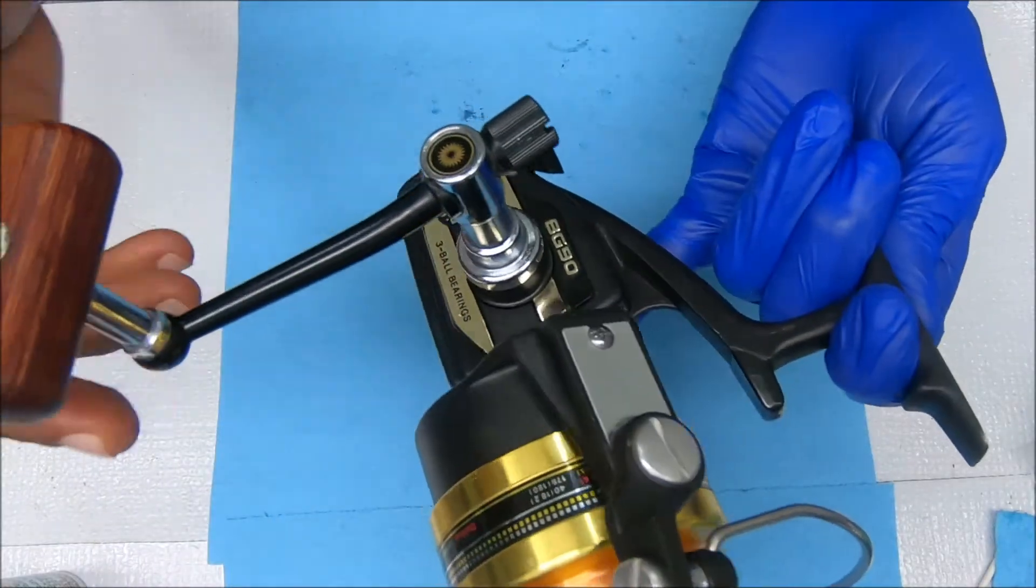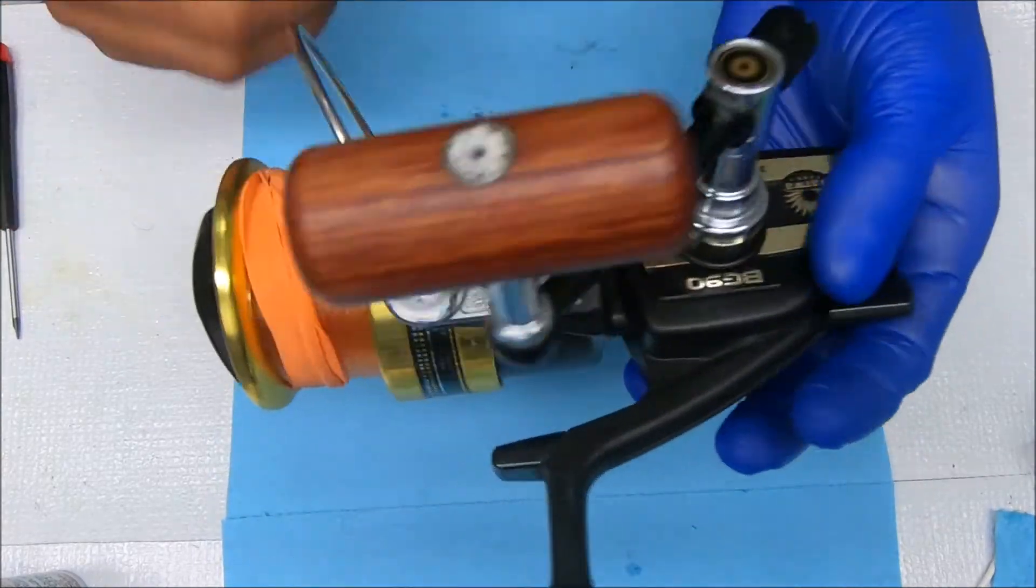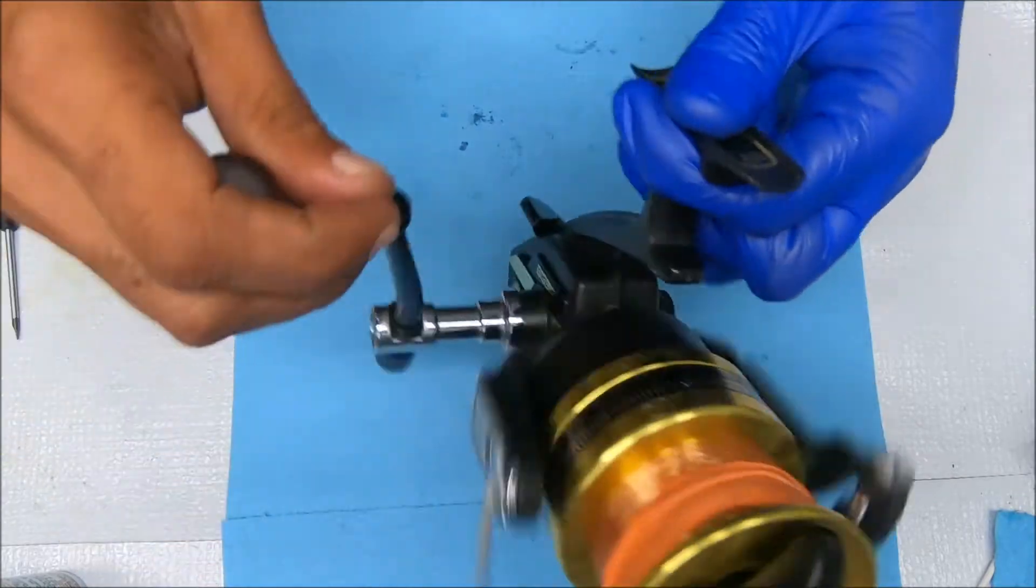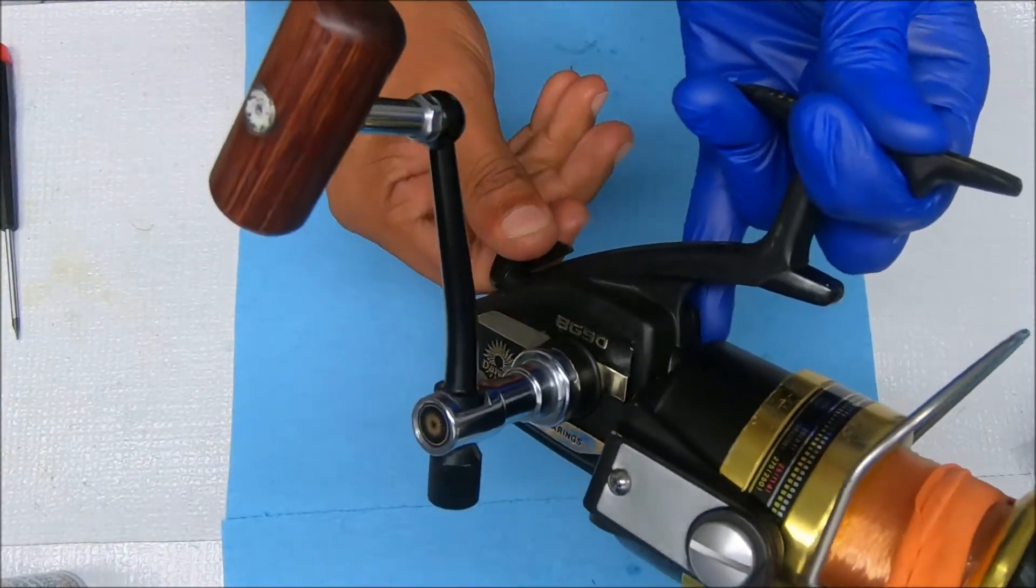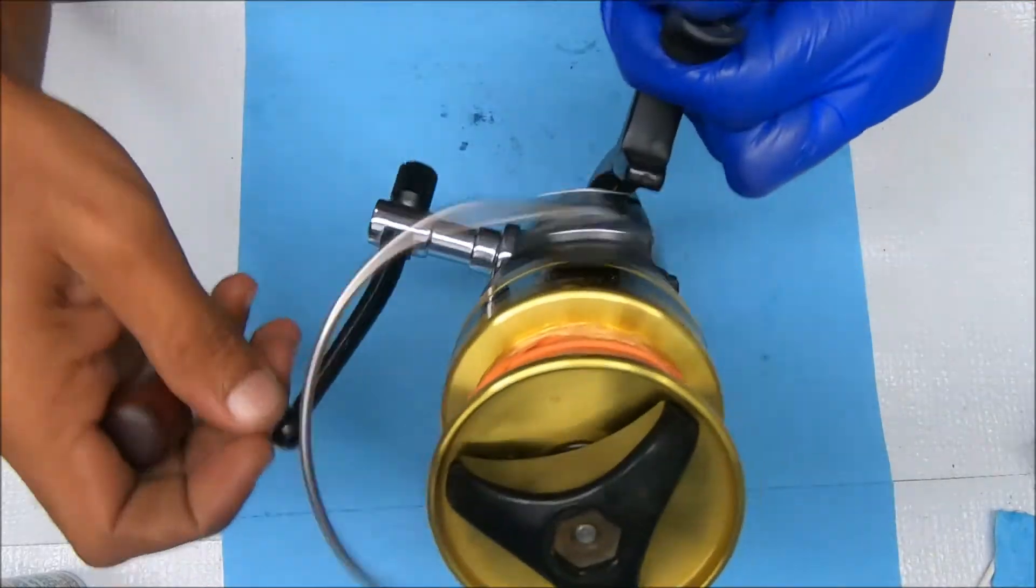All right, here we have a BG90. The lever, of course, is not working. This lever is kind of stiff, but even when you get it over to the other side, nothing's happening.